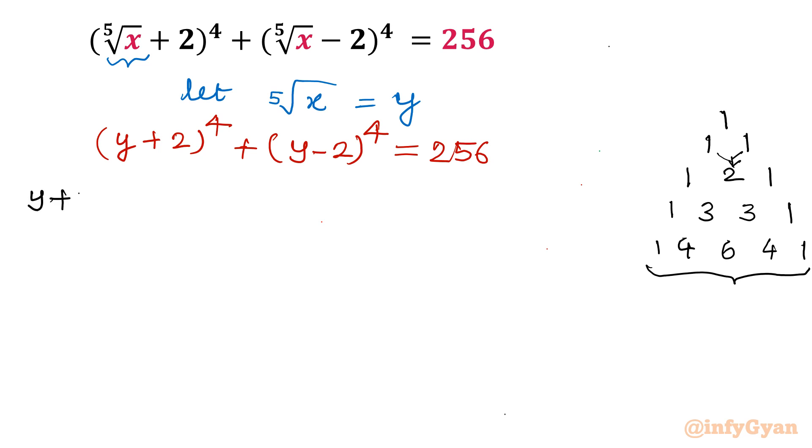Let me write y plus 2 whole power 4. The first coefficient is 1 with the maximum power of the first term, so y power 4 plus second coefficient is 4 times y cube times 2 plus third coefficient is 6, so 6 y square 2 square, fourth coefficient is 4 times y times 2 cube, and last term is 2 power 4.